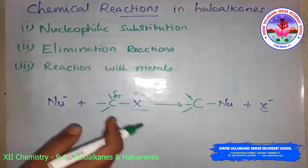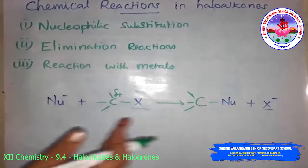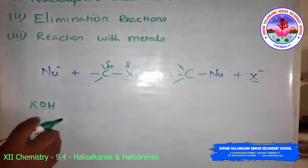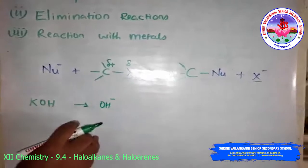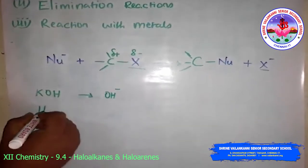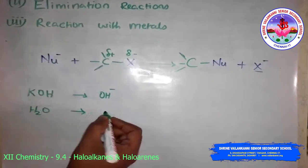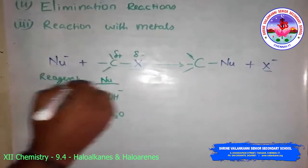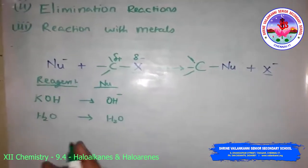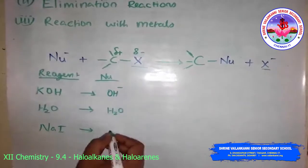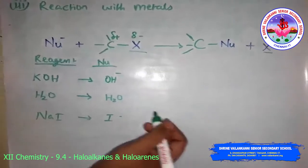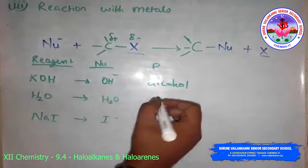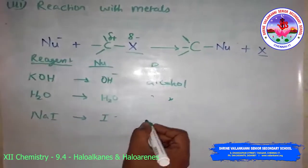The products formed by reaction of alkyl halides with common nucleophile reagents are as follows. With KOH or NaOH, the nucleophile is OH minus and the substitution product is an alcohol. With H2O as reagent, the nucleophile is H2O and the product is also an alcohol. With sodium iodide, the nucleophile is iodide ion and the product is an alkyl iodide.